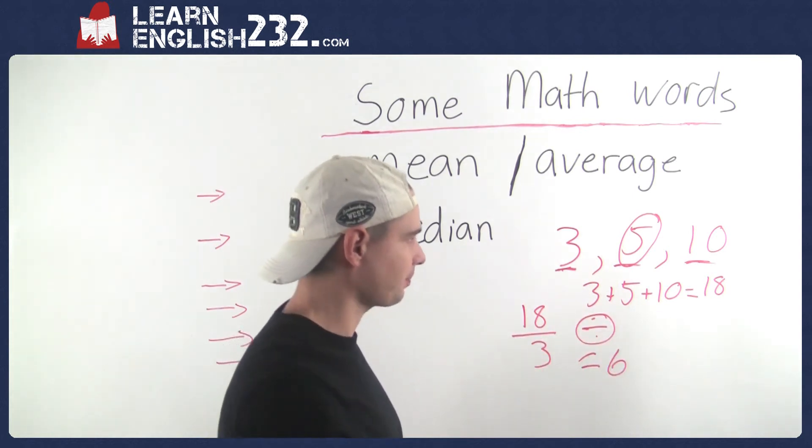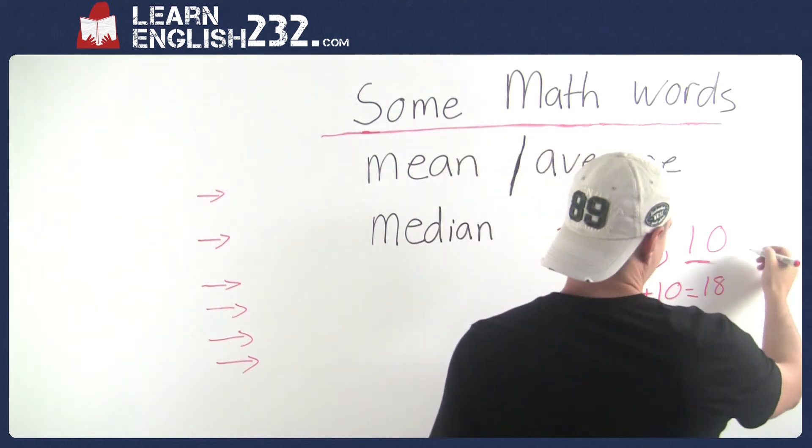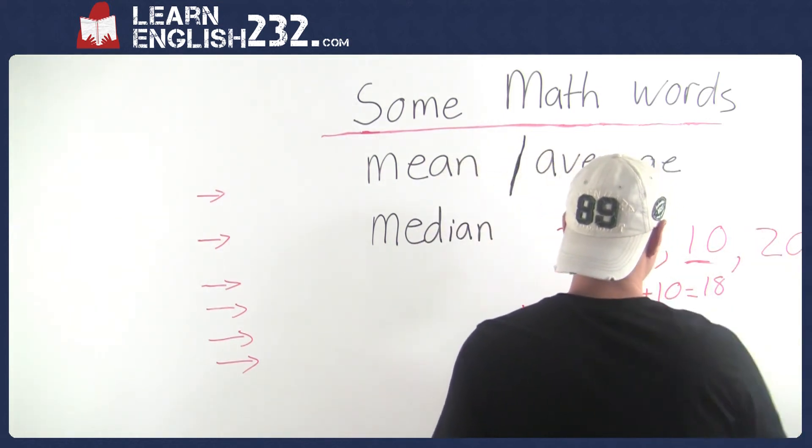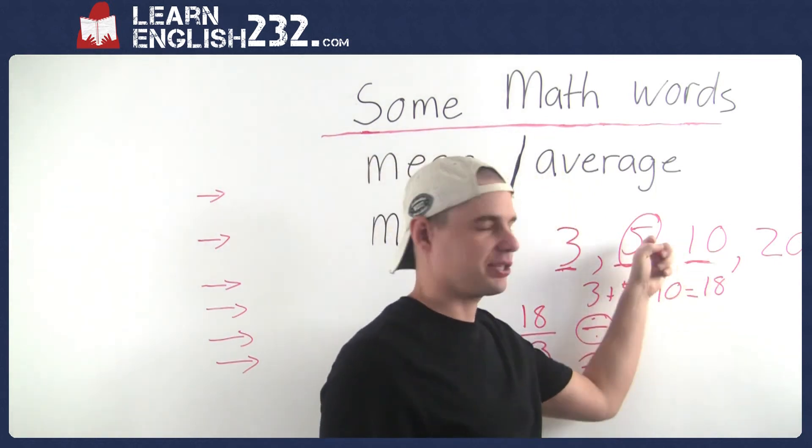So that's what median is. And it gets a little bit tricky, like if the next number was twenty, then the way you do median is you take the average of the two numbers in the middle.